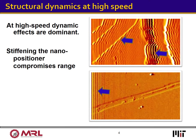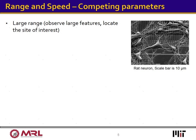One solution is to design stiffer nanopositioners that do not vibrate so easily. However, stiffening the positioner reduces the available positioning range, which is another very important characteristic of a nanopositioning system. The range of a nanopositioner in general, or in other words the field of view in the context of nanoscale microscopy, is as important as speed.